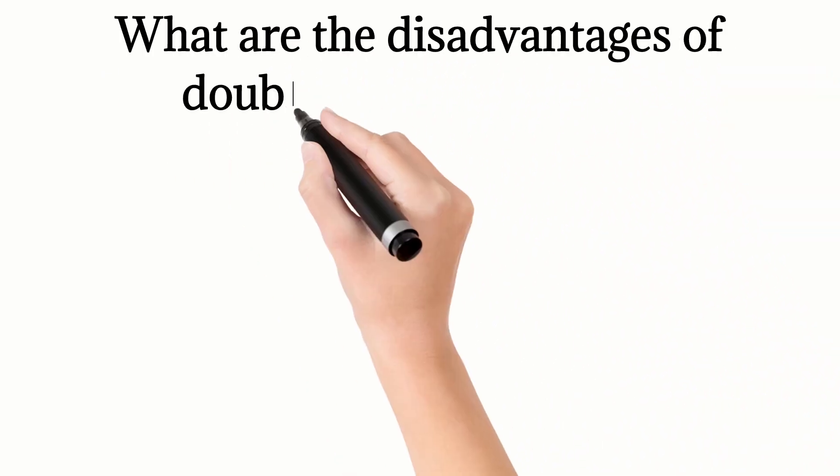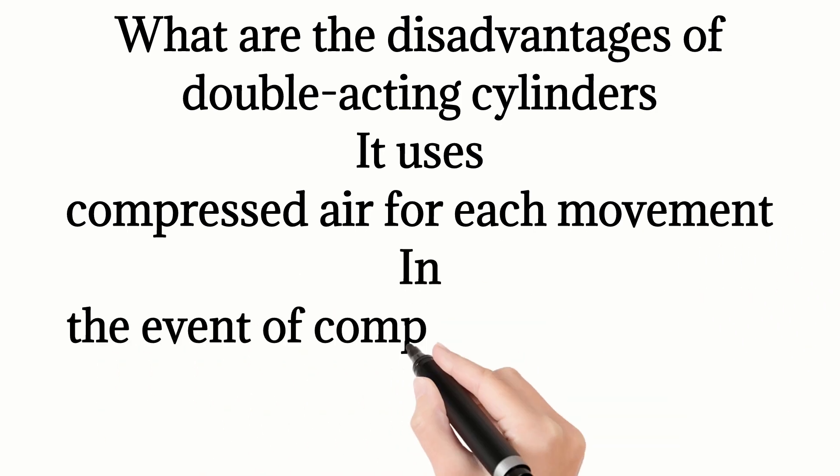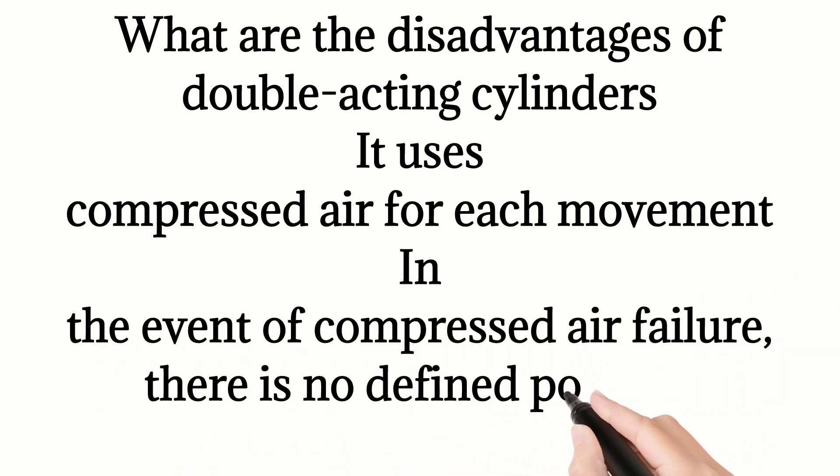What are the disadvantages of double acting cylinders? It uses compressed air for each movement. In the event of compressed air failure, there is no defined position.